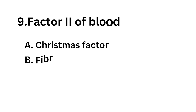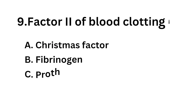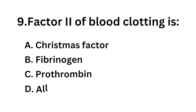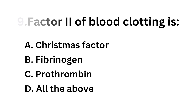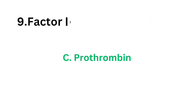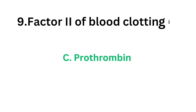Ninth question: factor 2 of blood clotting is — option A Christmas factor, option B fibrinogen, option C prothrombin, option D all the above. The correct answer is option C, prothrombin.